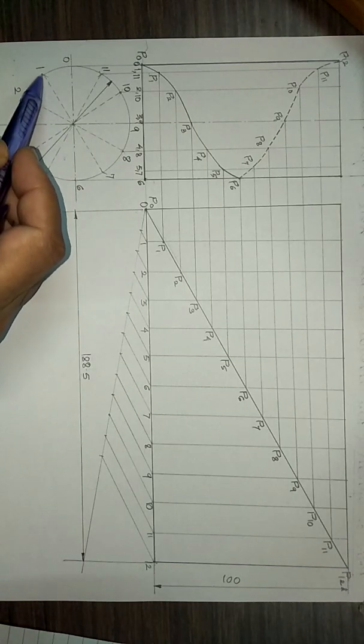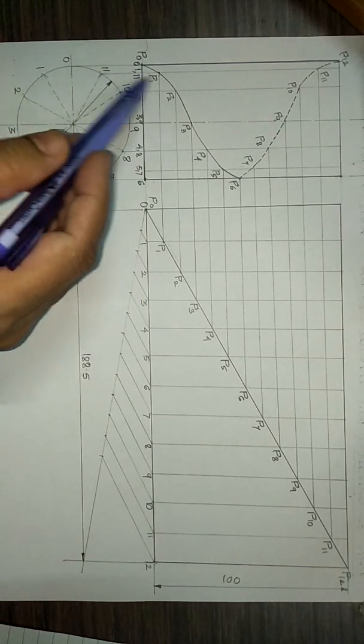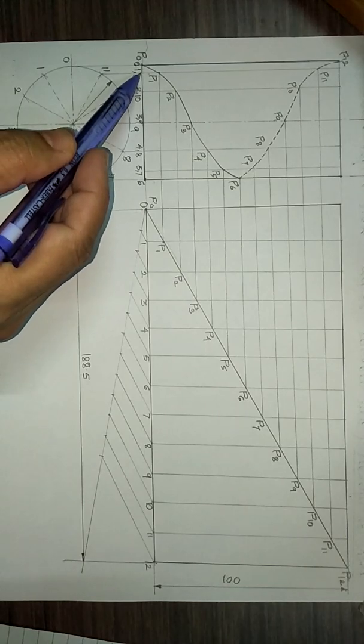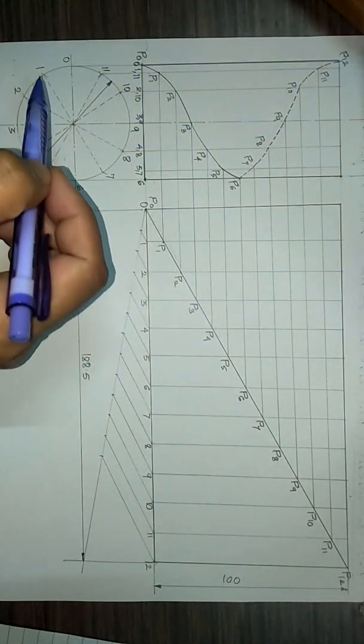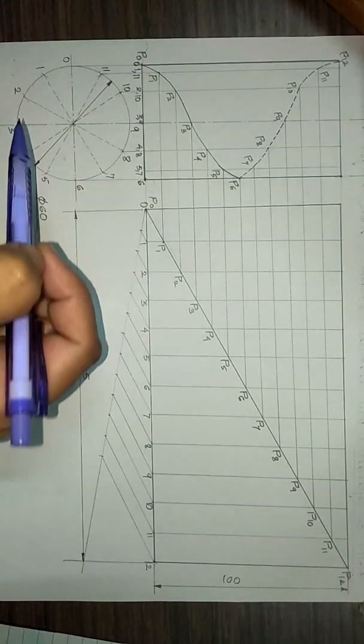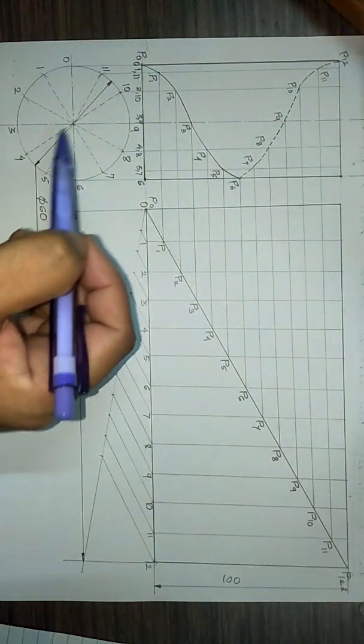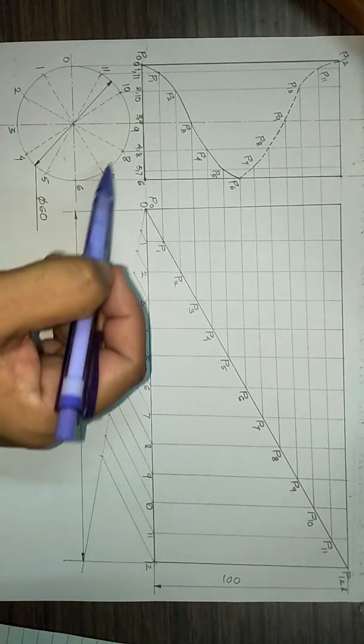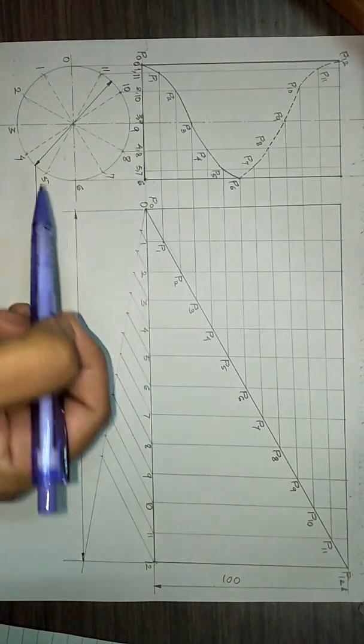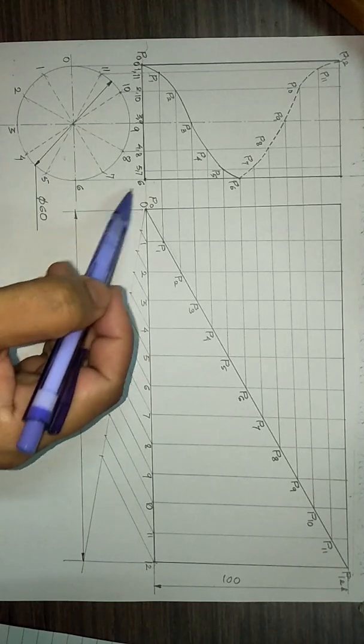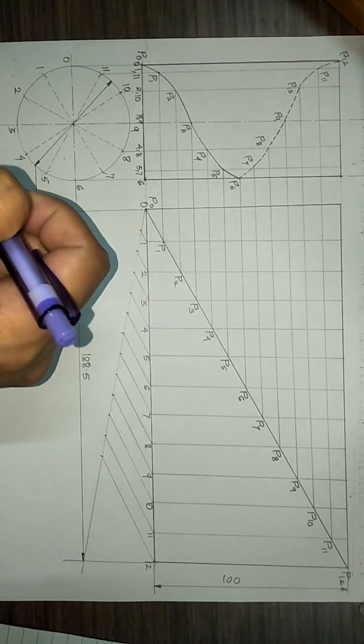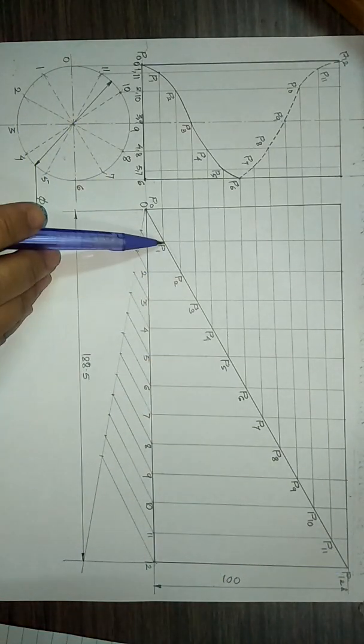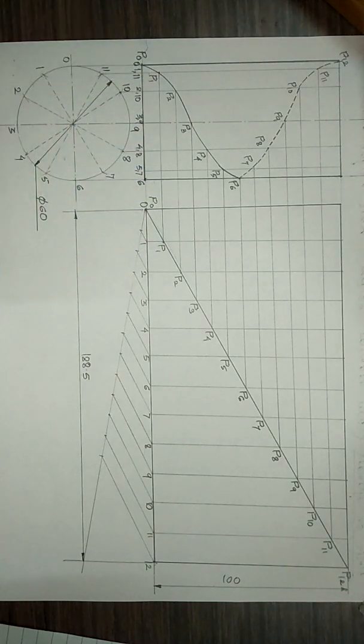Then we have transferred these points on the front view. 1 and 11 would be here. 2 and 10 will be here. 3 and 9 will be here, which is the center line, the axis of the cylinder. Here we have 4 and 8, and 5 and 7, and ultimately this is 6.